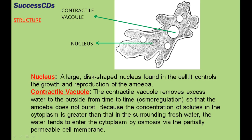The nucleus is a large disc-shaped structure found in the cell. It controls the growth and reproduction of the amoeba. The contractile vacuole removes excess water to the outside from time to time by osmoregulation, so that the amoeba does not burst. Because the concentration of solutes in the cytoplasm is greater than that in the surrounding fresh water, the water tends to enter the cytoplasm by osmosis via the partially permeable cell membrane.